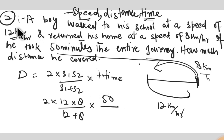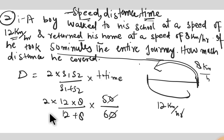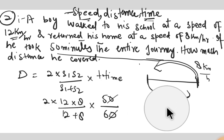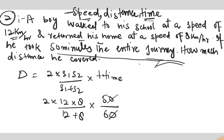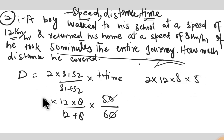Working through question two: we cancel zeros and apply the pattern. Going into the calculation: 2 into the first speed into the second speed, divided by their sum, gives us the answer for total distance.